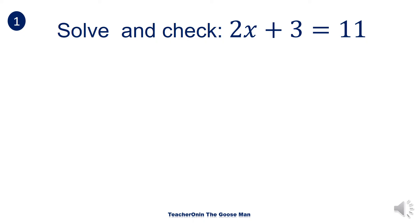Solve and check: 2x plus 3 is equal to 11. Here we will use two operations or two properties. I have 2x plus 3 is equal to 11. The first thing is I'll use the APE, or addition property of equality, to undo the addition — meaning I'll subtract both sides by 3.